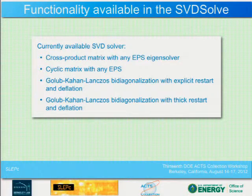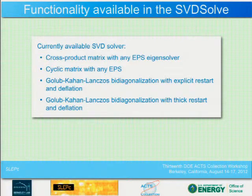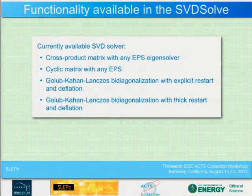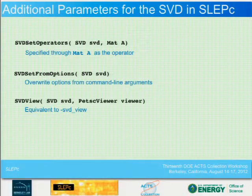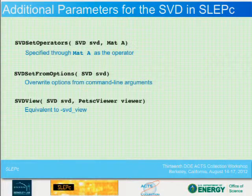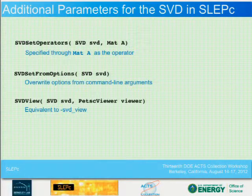What SVD methods are available? You have the cross-product matrix method (works with any EPS eigensolver), the cyclic matrix method (also with any EPS object), the Golub-Kahan Lanczos bidiagonalization with explicit restart and deflation, and the Golub-Kahan Lanczos with thick restart and deflation. The interface is SVD set operators, passing matrix A, then set from options, and SVD view.